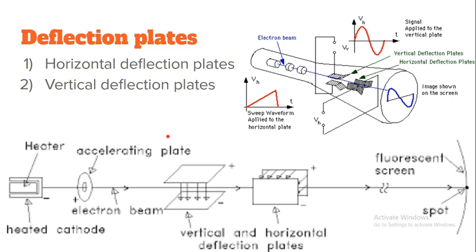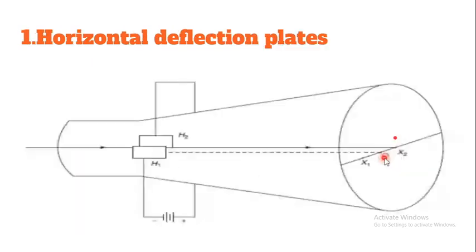This is the accelerating plate. This is a vertical deflecting plate. This is a screen paint display. This is a horizontal deflecting plate.